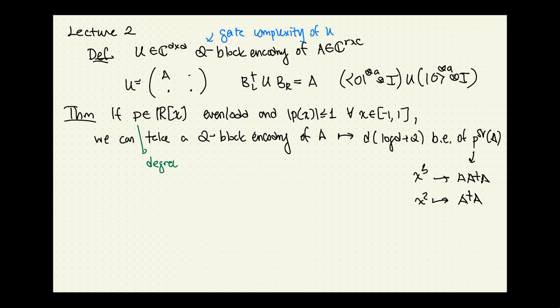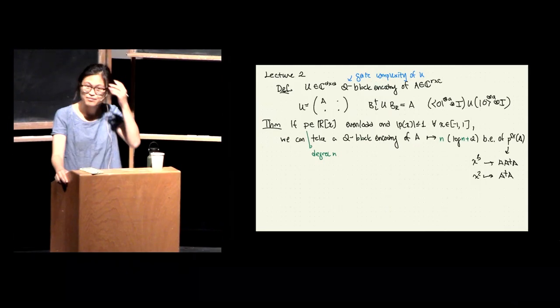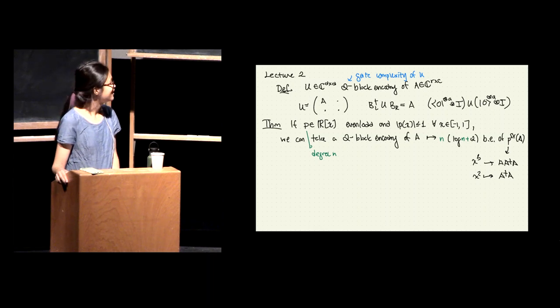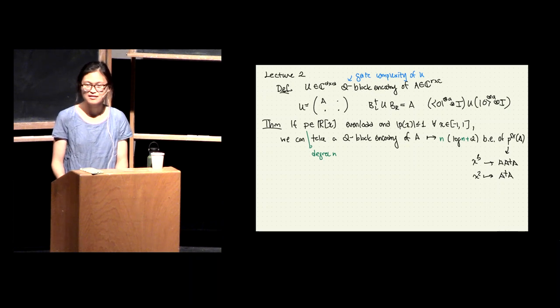P is degree — I'm going to use D for the dimension and N for the degree. So I'm going to prove this. It might be a little tedious at times, but hopefully illuminating, because what we're going to do is analyze the expressivity of some types of quantum circuits, and I think that's a useful exercise.